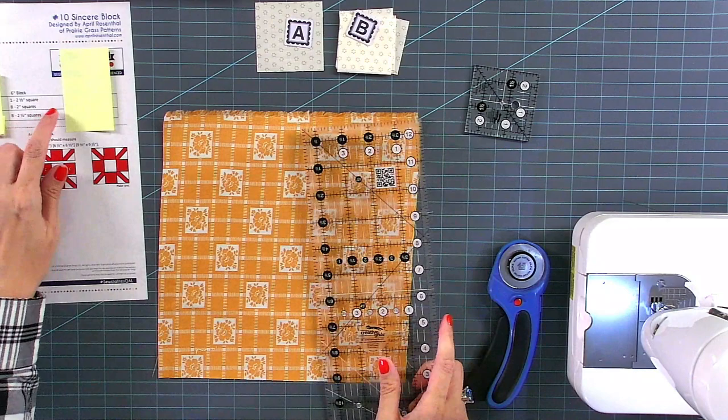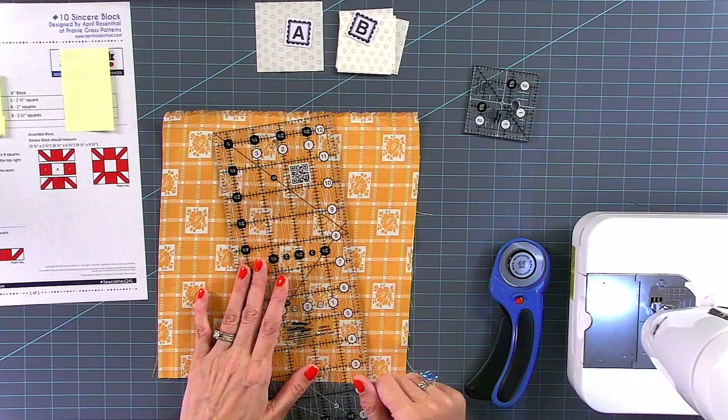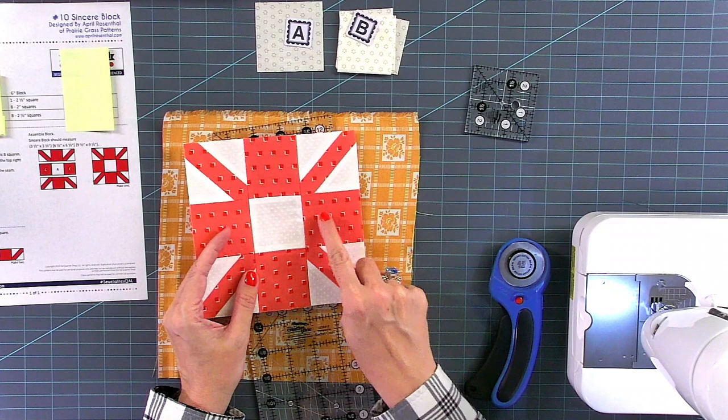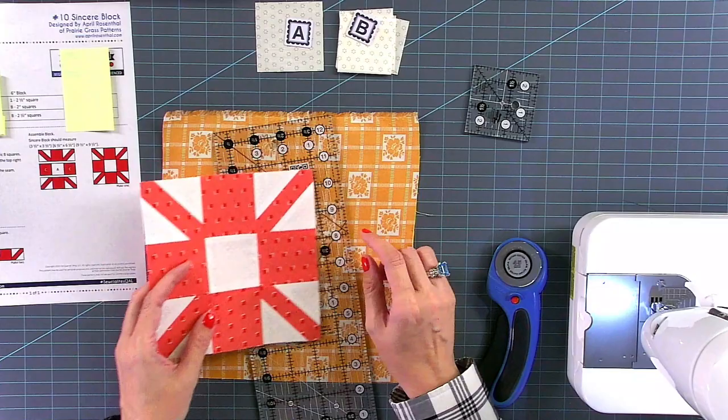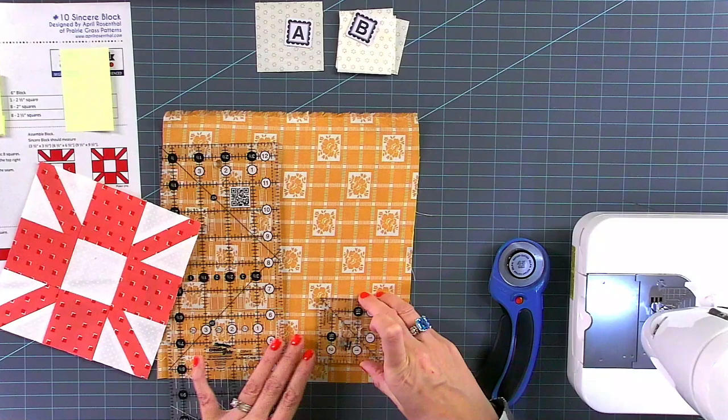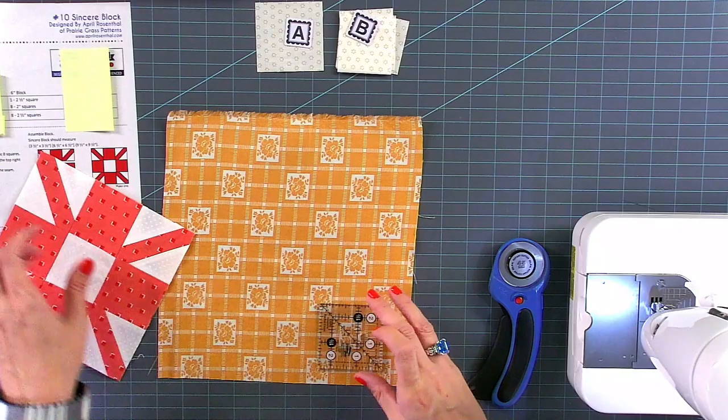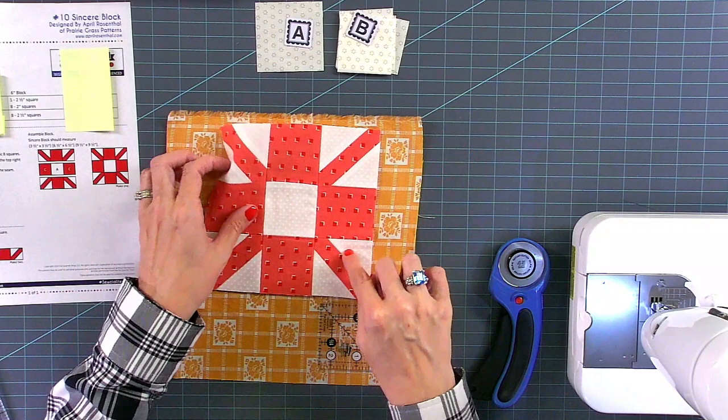We need eight two-and-a-half-inch squares. On this one, because it is a stripe, I'm not going to fussy cut these squares initially. Sometimes I do fussy cut, which would mean that I would center these in the center of each. I don't have enough fabric to do that. Actually, I do have enough. Do you think I should do it or not? Yeah. Okay, we'll do it real quick. So, I'm going to fussy cut the four that go right here.